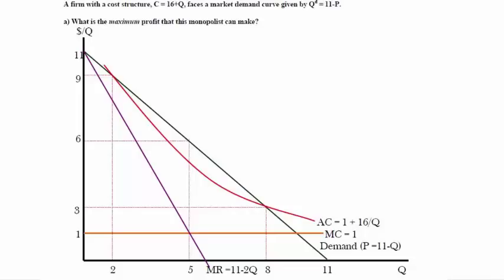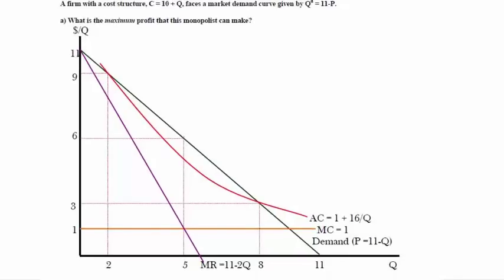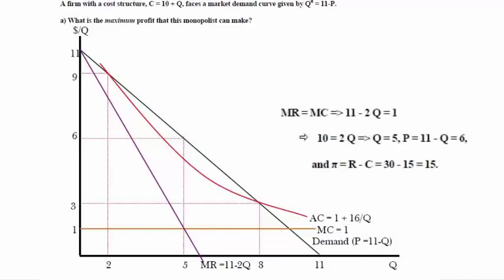Let us lower the fixed cost from 16 to 10 and recalculate the problem. The first thing you should notice is that changing the fixed cost does not affect the MR equals MC outcome, because the marginal cost is still 1 and the marginal revenue is exactly what it was. We're going to obtain cost equals 15 at maximum profit, and the revenue is 30. So 30 minus 15 equals 15.